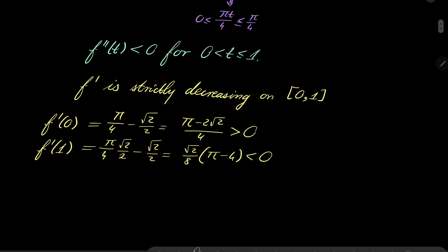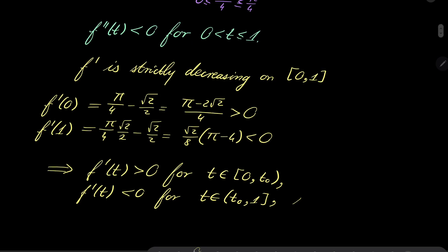Which means that we can write that f'(t) > 0 for t in the interval [0, t₀), and our derivative is negative for t in (t₀, 1], for some t₀ between 0 and 1. How do I know it? Because our function is strictly decreasing. So first it's positive, then it attains 0 and becomes negative and stays negative.